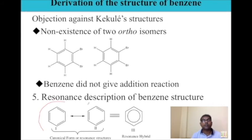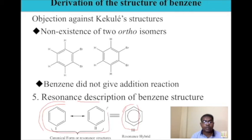Finally, the resonance structure of benzene was derived. The actual structure of benzene is the combination of these two structures — called canonical forms — and the final structure is the resonance hybrid. In the next video, I will be discussing the molecular orbital theory, MOT, for the benzene structure.